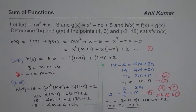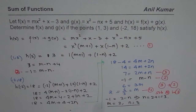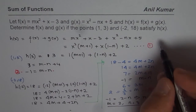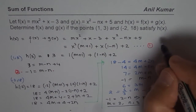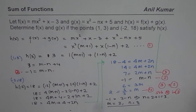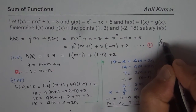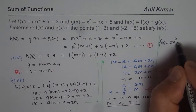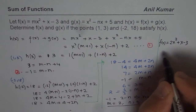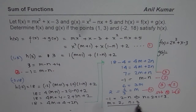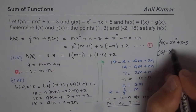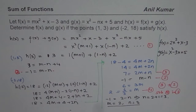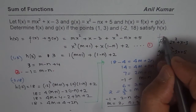Since we know m and n, we can write down our functions. f of x equals 2x squared plus x minus 3, and g of x equals x squared minus 3x plus 5. So that is how we get our answer.